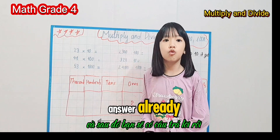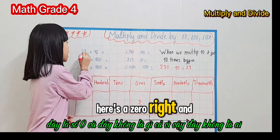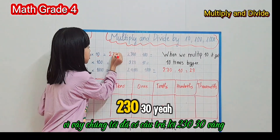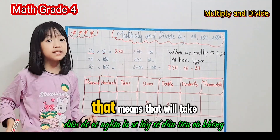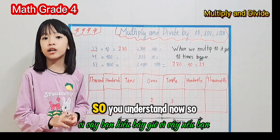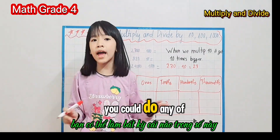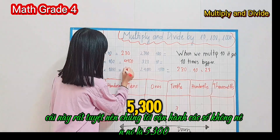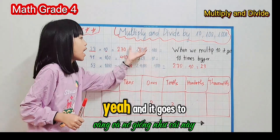Here's the trick: look at how many zeros the multiplier has. For example, 10 has one zero, so we just add one zero to the number. So 23 × 10 = 230. That's really easy! Just count how many zeros are at the end of the multiplier and add that many zeros to your number. For example, 53 × 1000 — that has three zeros, so the answer is 53,000.